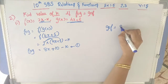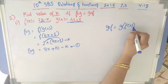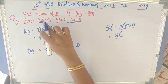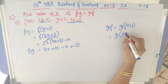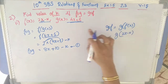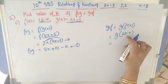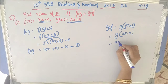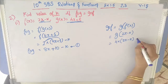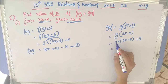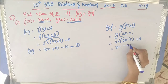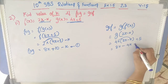Now find g∘f, which is g of f(x). f(x) = 2x − k, so find g(2x − k). In g(x) = 4x + 5, replace x with 2x − k: 4(2x − k) + 5 = 8x − 4k + 5. This is g∘f and I am marking it as equation 2.